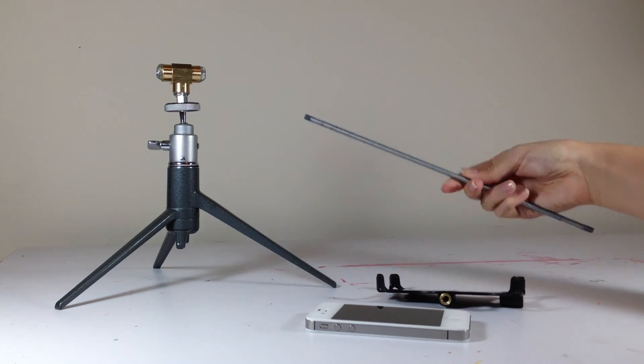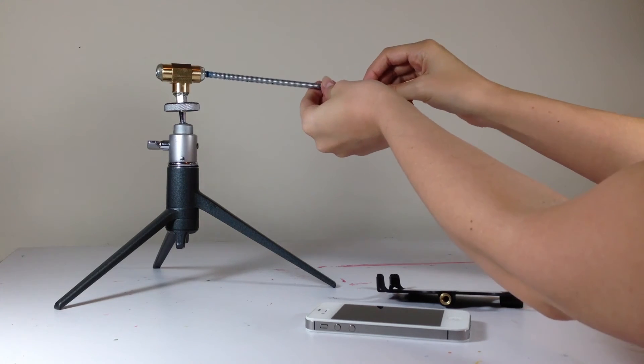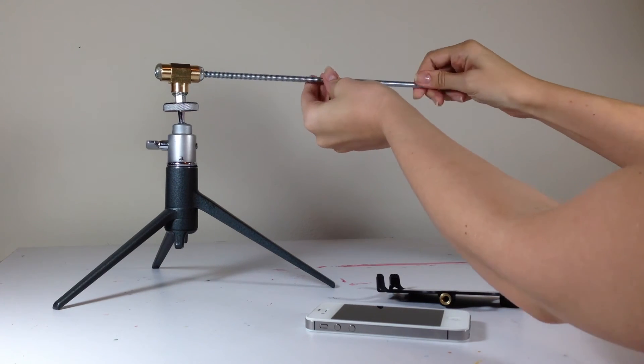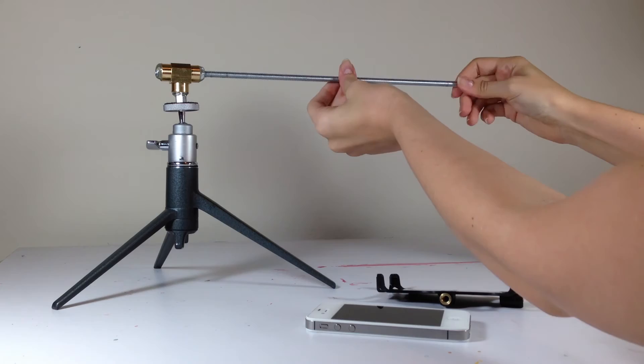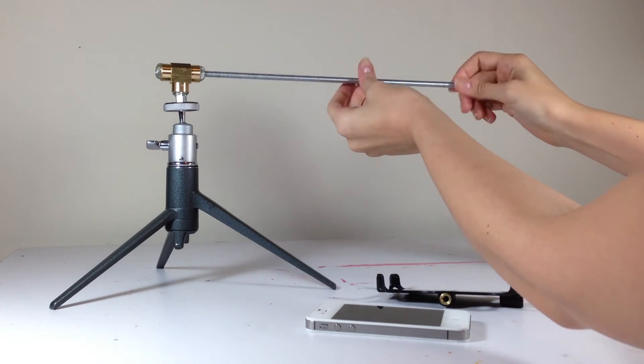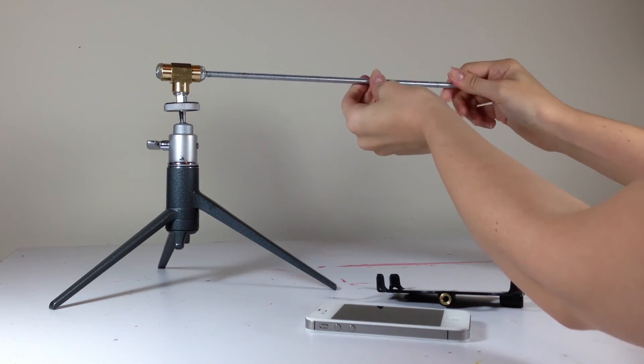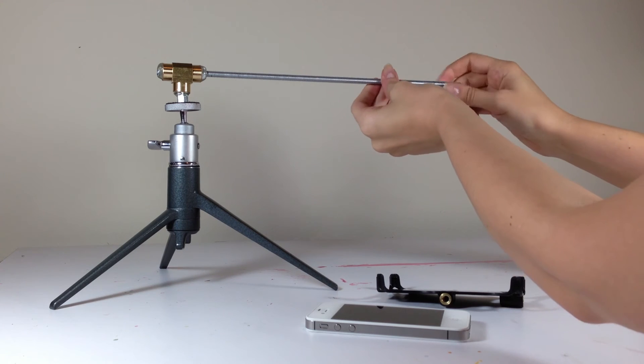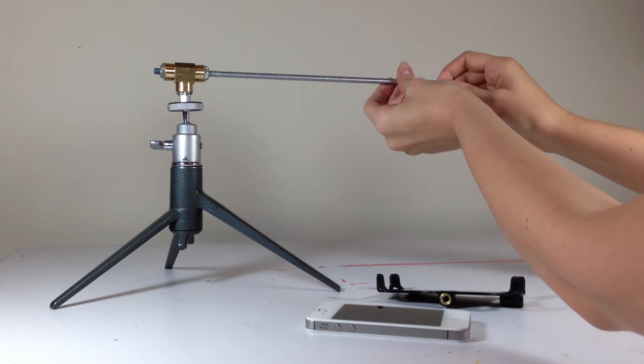Like that. And then screw your rod into the top part. And the great part about this is that you can use different lengths of the bar like I said before, and you can also control the length by screwing or unscrewing.